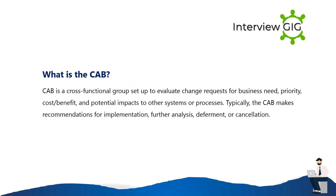What is the CAB? CAB is a cross-functional group set up to evaluate change requests for business need, priority, cost, benefit, and potential impacts to other systems or processes. Typically, the CAB makes recommendations for implementation, further analysis, deferment, or cancellation.